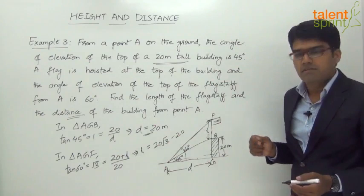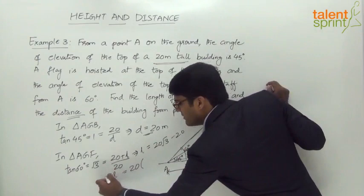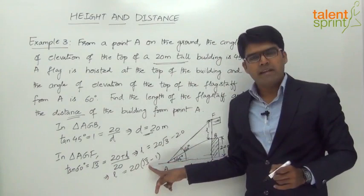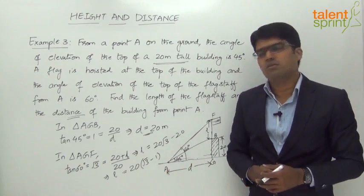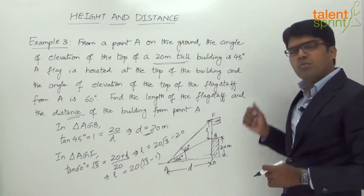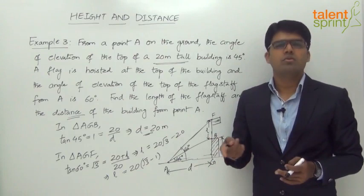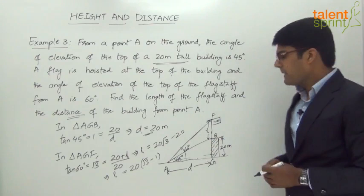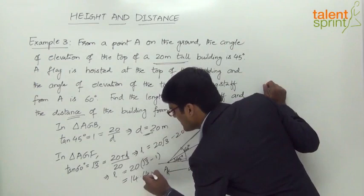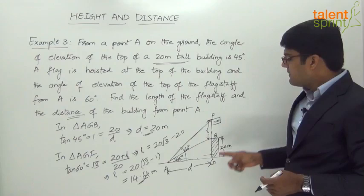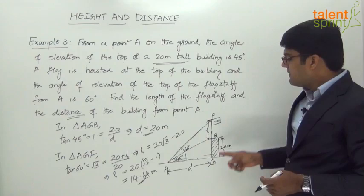Taking 20 as common: L = 20(√3 − 1). Since √3 ≈ 1.732, we get √3 − 1 = 0.732, so L = 20 × 0.732 = 14.64 meters. The final answer: the distance between the building and point A is 20 meters, and the length of the flag staff is approximately 14.64 meters. Simply use the knowledge of trigonometric ratios from the topic of trigonometry to solve these height and distance questions.